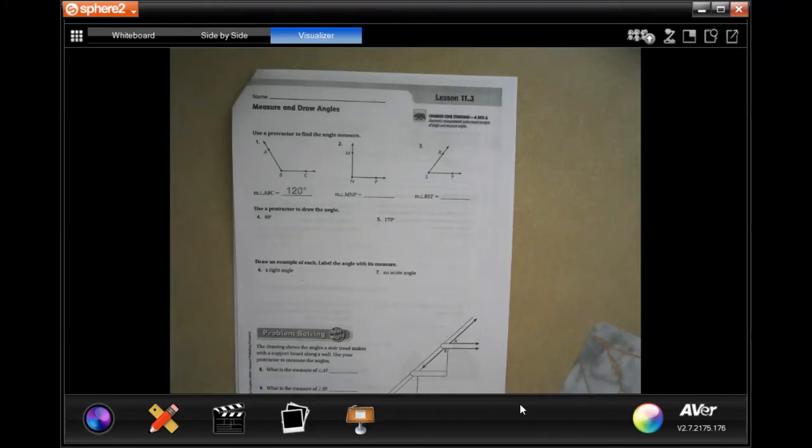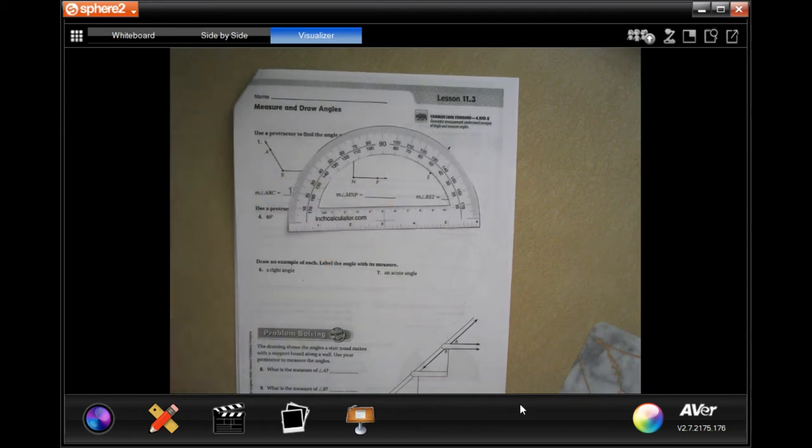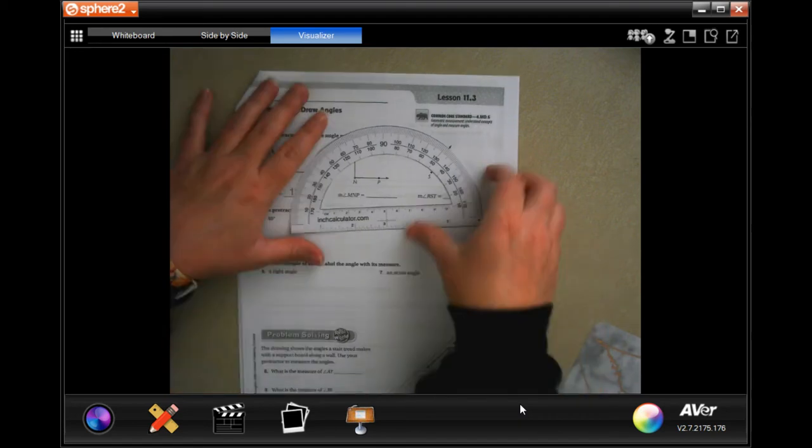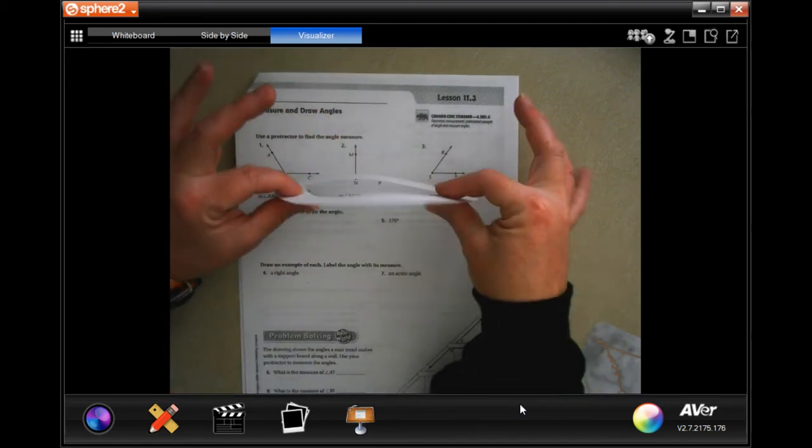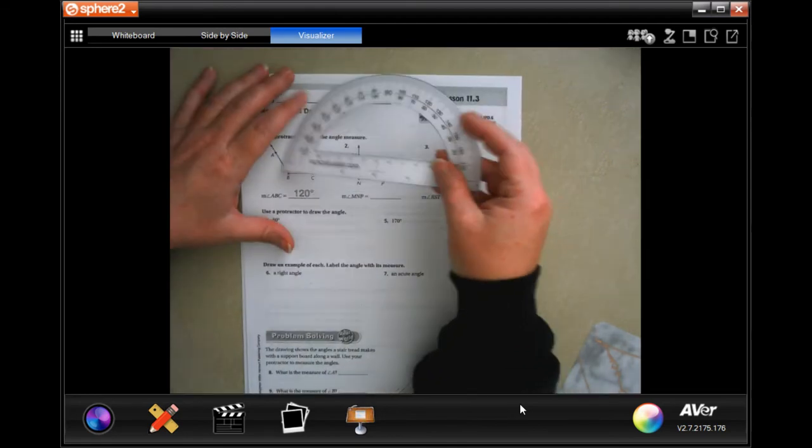Hey y'all, welcome to fourth grade chapter 11 lesson 3. We're gonna get started now. This has to use a protractor to find the angle measures. I just went to Google and printed one out. It doesn't matter if it's from Google and paper. That's all mine is. You just got to have one.